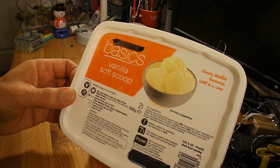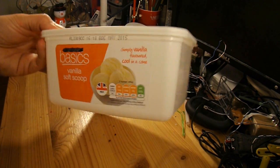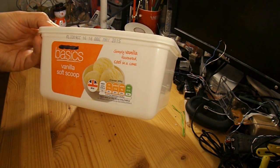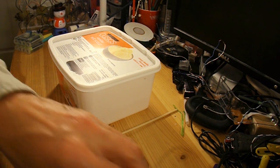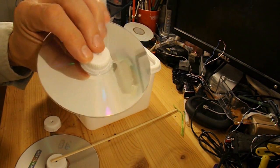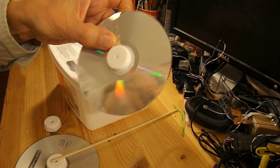Vanilla Soft Scoop, although I don't suppose it matters what type of ice cream it had in it. It's a 2 litre container. I've got a quick rummage in my box there. I've got some CDs that have already got some bottle tops hot glued to them.